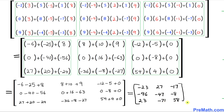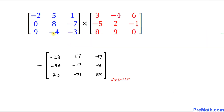Once again, the dimension of this answer matrix is 3 by 3 — 3 rows and 3 columns. Thus, when you multiply these two given matrices, this is our final answer.